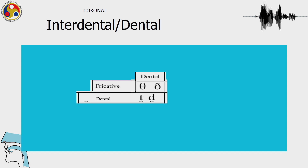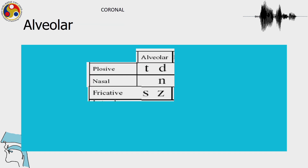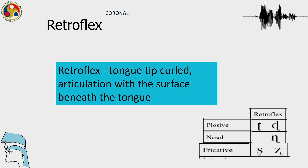After labial, the place of articulation that we talked about is that of coronals. First in the coronal series we talked about interdental and dental sounds and these are the symbols — the fricatives used for 'th' sounds. The stops have a diacritic beneath them used to show the dental place of articulation. For alveolar, we have the very commonly used romanized symbols, and also the alveolar nasal and the fricatives, and we also just talked about retroflex.